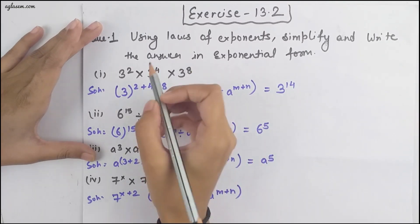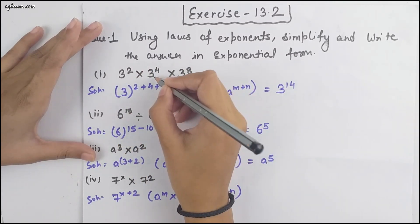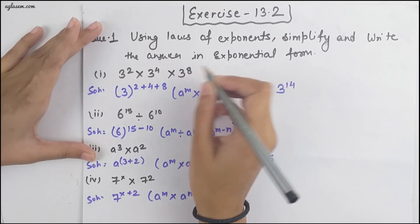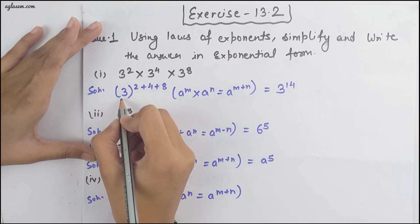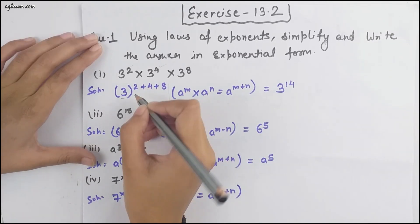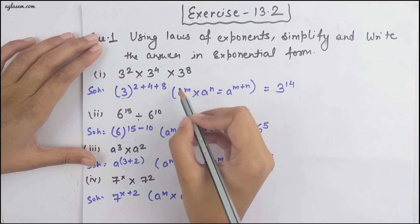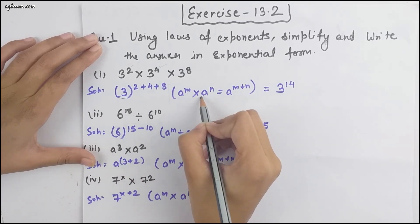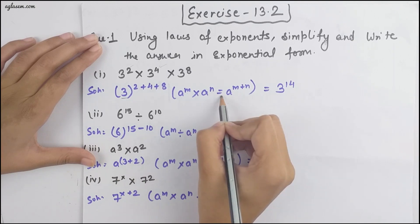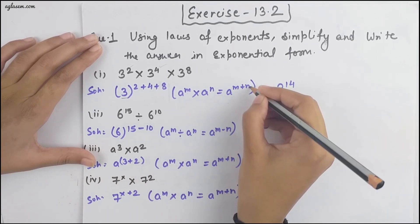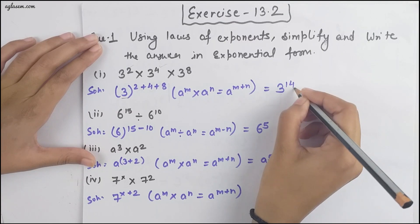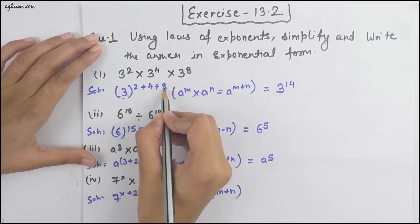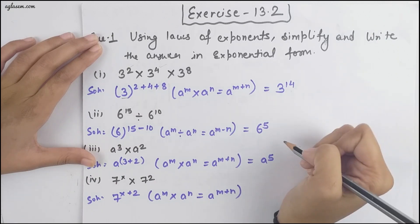Our first question is: using laws of exponents, simplify and write the answer in exponential form. The first part is 3 raised to the power 2, into 3 raised to the power 4, into 3 raised to the power 8. When the base is the same, the powers get added. The formula is a^m × a^n = a^(m+n), so we get 3 raised to the power 14, since 2 + 4 + 8 = 14.